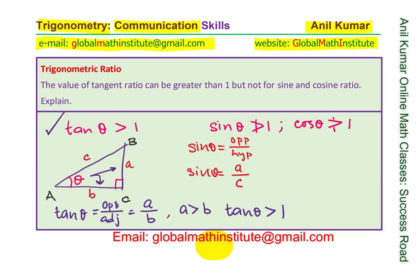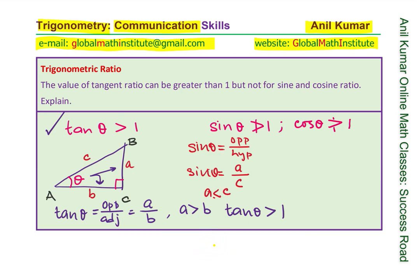Now, clearly A is always less than C. It can be equal to C, but it cannot be greater than C. Therefore, we see that sin theta cannot be greater than 1 — because for 90 degrees it equals 1. So sin theta is not greater than 1. Since the legs are smaller than the hypotenuse, this makes sense.